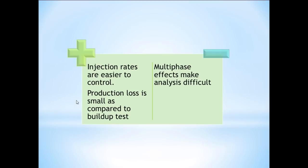The advantages of the fall-off test include that injection rates are easier to control, and compared to the buildup test, production loss is smaller. In a buildup test the well is shut in so there is no production, whereas in a fall-off test we stop injection but still observe some production — not a complete stop. The disadvantage is that multiphase effects make the analysis difficult.